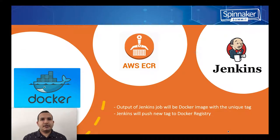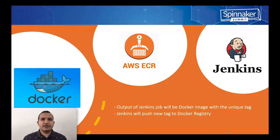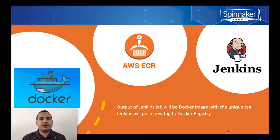When the Jenkins job triggers in response to a webhook from GitHub, Jenkins will compile the code, build a Docker image, and in another step of the same pipeline, push that Docker image to a Docker registry. In this example, we are using AWS ECR — the AWS Elastic Container Registry. The output of the Jenkins job is a Docker image with a unique tag. Now we have a deployable artifact ready in our Docker registry. We have an event where a new unique Docker tag is pushed to the registry, and we would like that tag to trigger a deploy event through a Spinnaker pipeline.